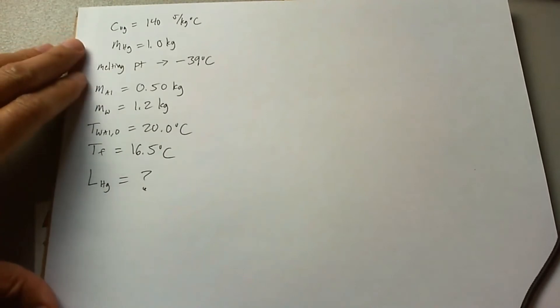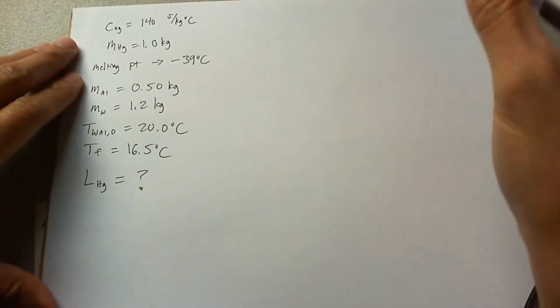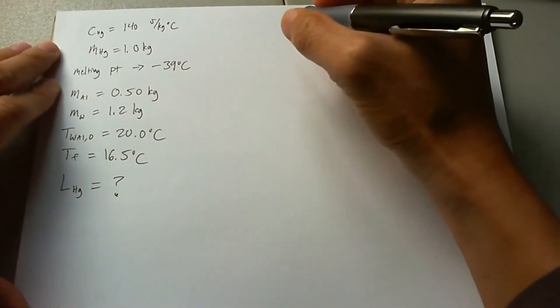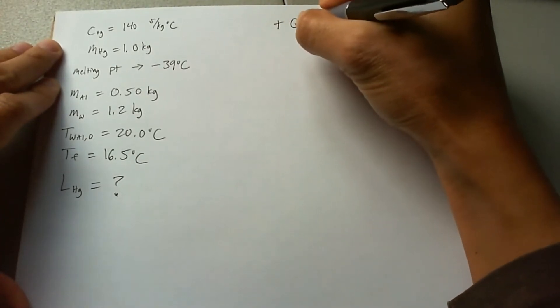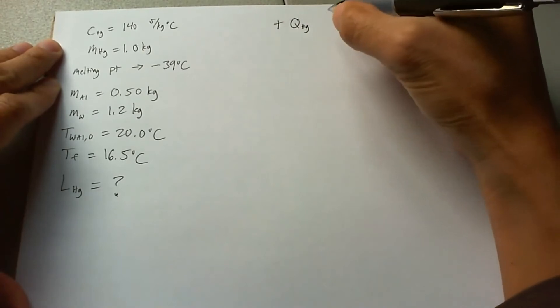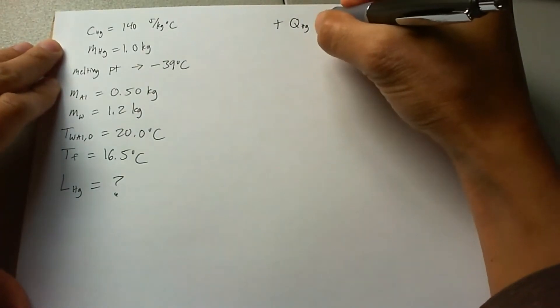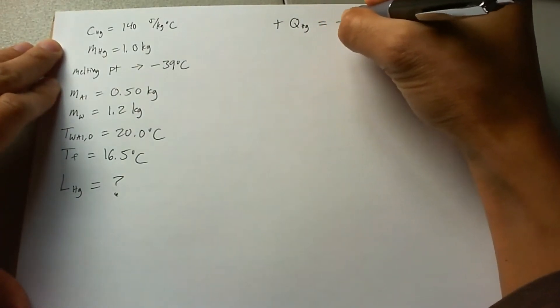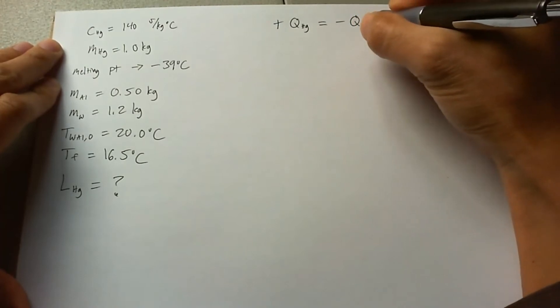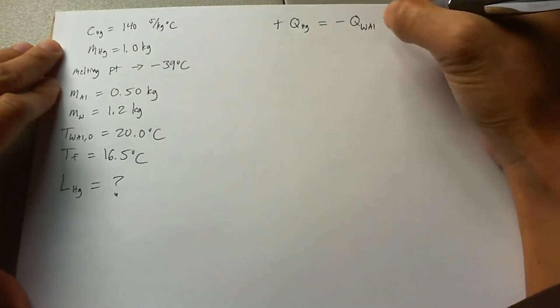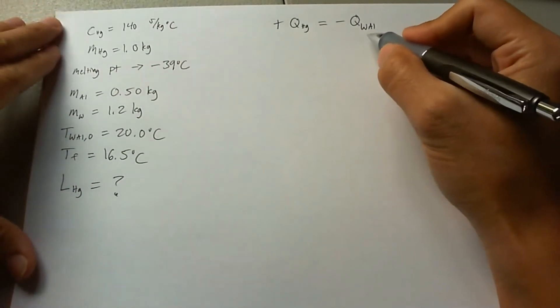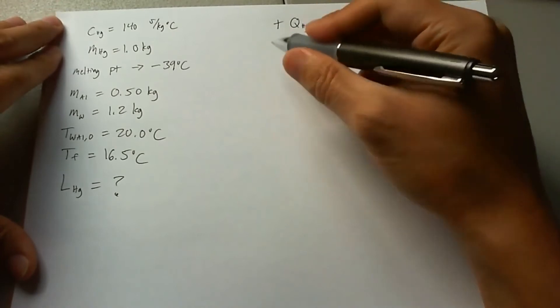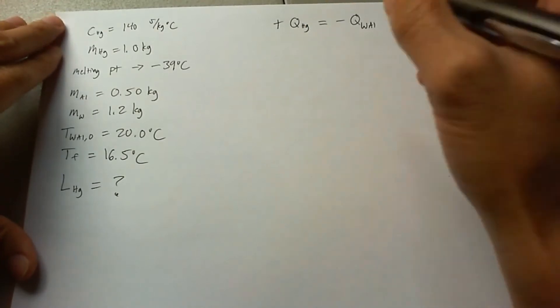So mercury is going to go under two phases. Let me go ahead and do the conservation of energy equation first. We have heat being transferred to the mercury from the aluminum canister, and the heat is being transferred out of the aluminum canister and water. So this is the conservation of energy equation.